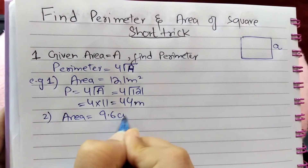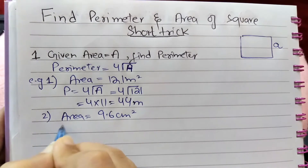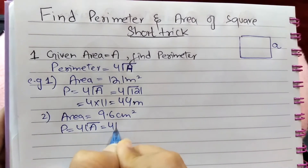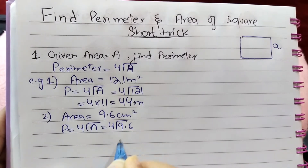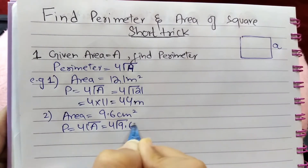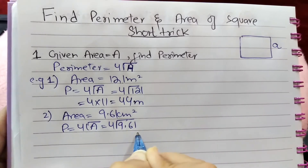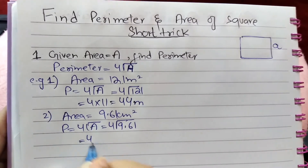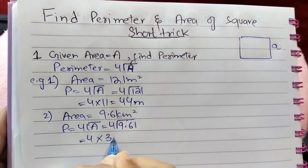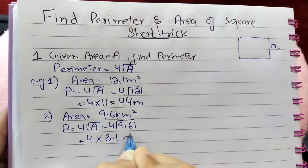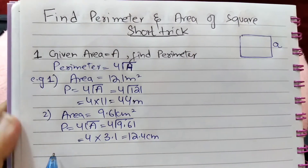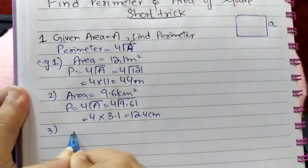Next example: suppose area is given as 9.61 centimeter square, find perimeter. Perimeter equals four times the square root of the area, which is equal to four times the square root of 9.61. Since the square root of 9.61 is 3.1, so four into 3.1 gives the answer 12.4 centimeters.